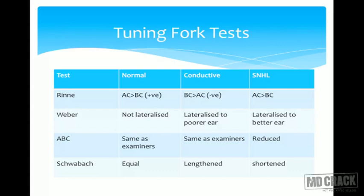Tuning fork tests commonly use 512 Hz frequency. Tuning forks with frequency less than 512 Hz are better felt than heard, while those above 512 Hz have less decay time. In the Rinne test, air conduction greater than bone conduction is Rinne positive — seen in normal individuals or sensorineural hearing loss. Rinne negative (bone conduction better than air conduction) is seen in conductive hearing loss. In the Weber test, it is not lateralized in normal individuals, lateralizes to the poorer ear in conductive loss, and to the better ear in sensorineural hearing loss.